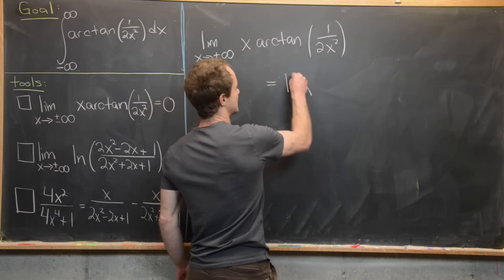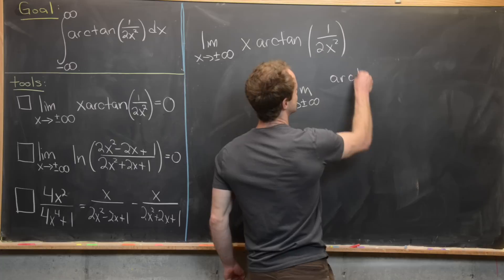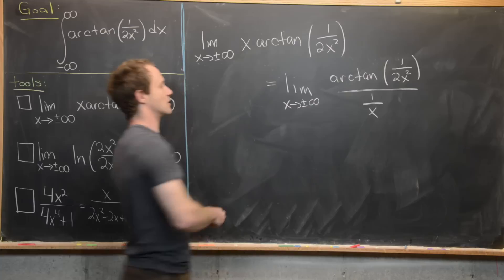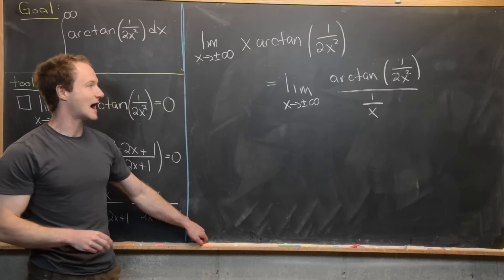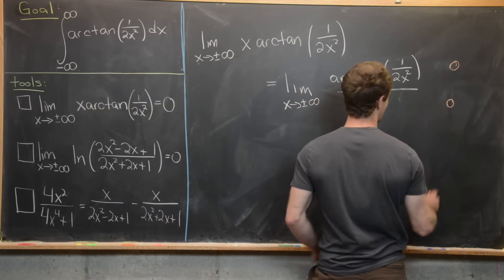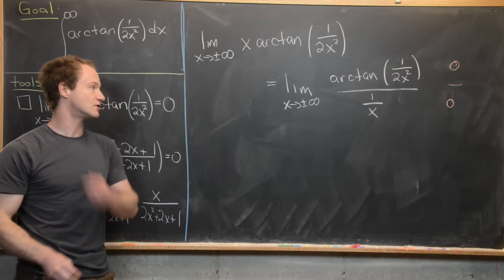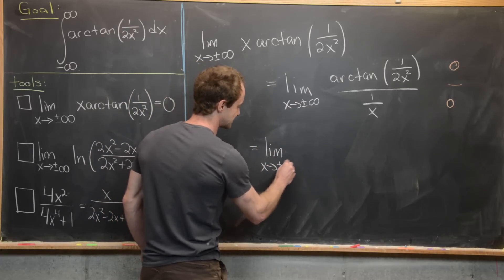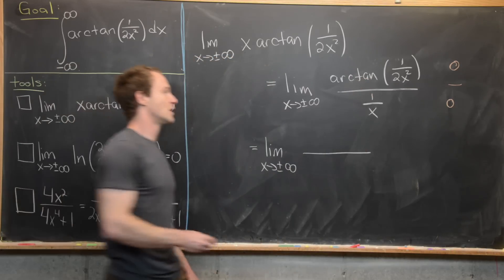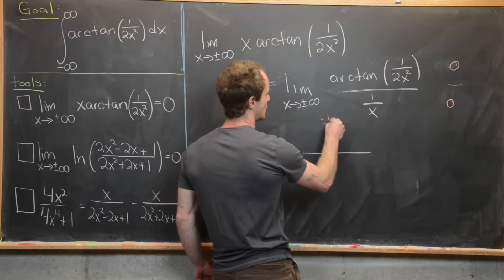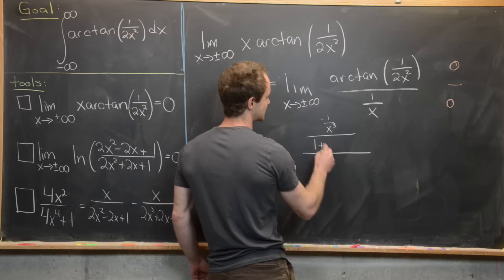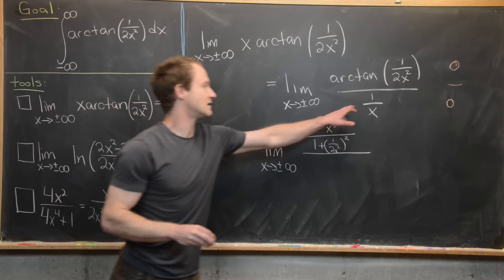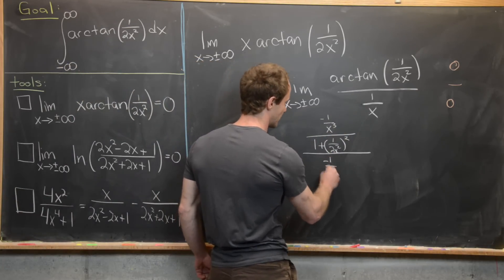We rewrite the limit as x→±∞ with arctan(1/(2x²)) in the numerator and x rewritten as a divisor: 1/x in the denominator. The numerator approaches zero and the denominator approaches zero, giving us 0/0. Applying L'Hôpital's rule, the derivative of the numerator via the chain rule gives −1/x³ divided by (1 + (1/(2x²))²), and the derivative of the denominator gives −1/x².